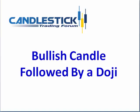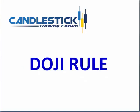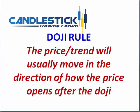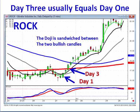It is very easy to identify. Usually you see a big bullish candle followed by a doji. Then we utilize one of the strong implication doji rules, which is simply that the price or the trend will usually move in the direction of how they open after a doji. This makes for a very simple, easy to identify three day pattern — a big bullish candle followed by a doji.